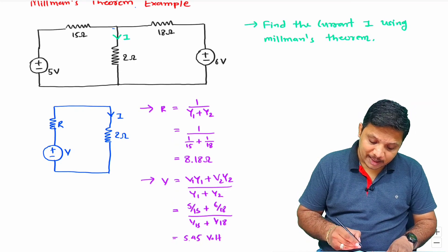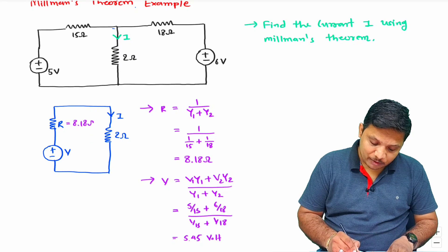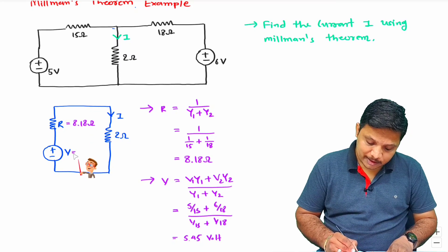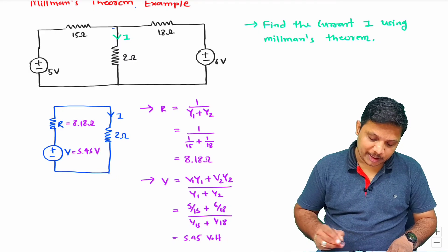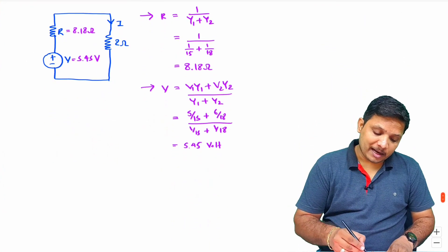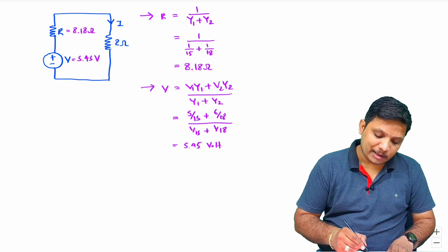Now we got the value of R and V. Let us substitute it here. 8.18 ohm and V is 5.45 voltage. So now we can identify current I by applying KVL in the loop.